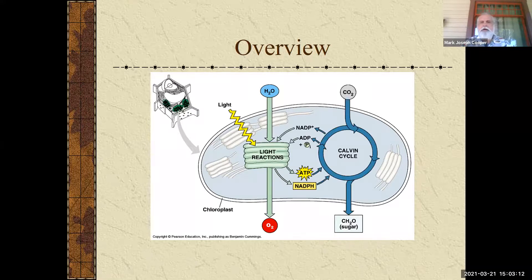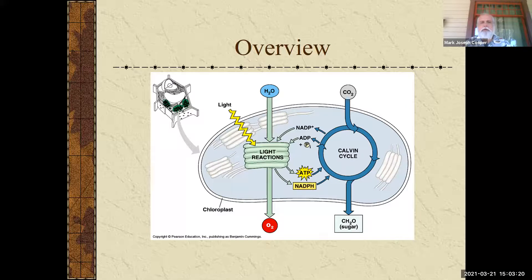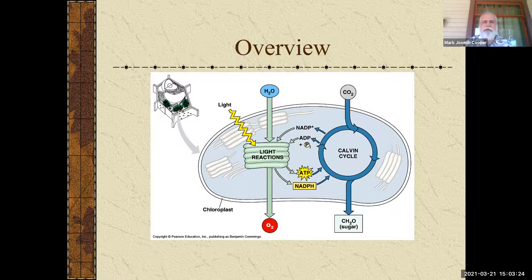And then the next one is the Calvin cycle. That's what's going to be taking in the CO2. And then it's also going to be using the ATP and the NADPH from the light reactions. And that's where you're going to get your sugar. And for our purposes, that will be glucose.